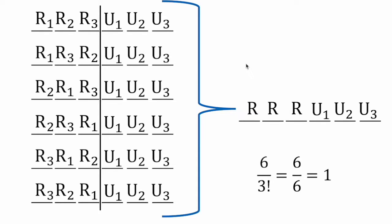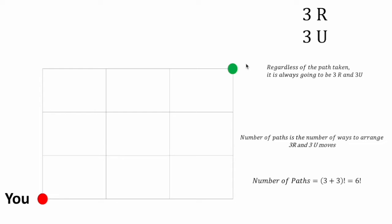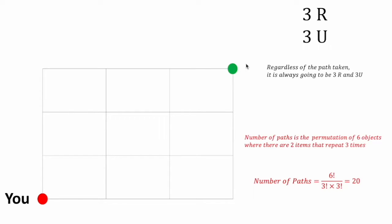And of course, the same goes for the up moves as well, for any other arrangement. Going back to the sub-problem, we can see now that instead of six factorial, the number of paths is the permutation of six objects where there are two items that repeat, each repeating three times. Hence, the number of paths is six factorial divided by three factorial divided by three factorial, which equals 20 — giving us 20 paths.